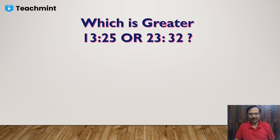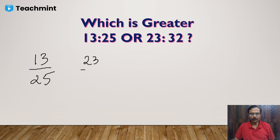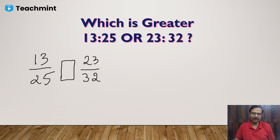Now, 13 ratio 25 is the same as 13 upon 25, and the other ratio is 23 upon 32. I need to put the appropriate sign — greater than, less than, or equal to — in the box between them. What I'll do is take the numerator of the first ratio, that is 13, and multiply it by the denominator of the other ratio.